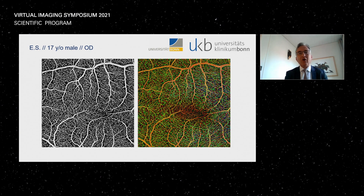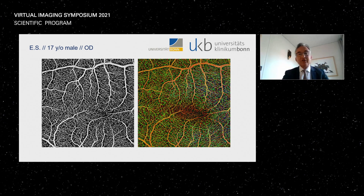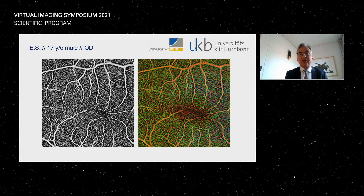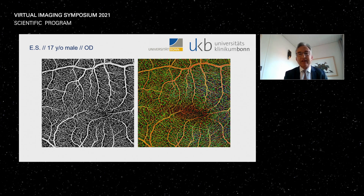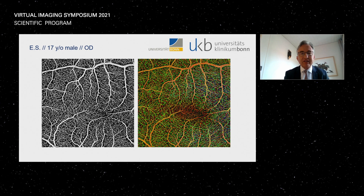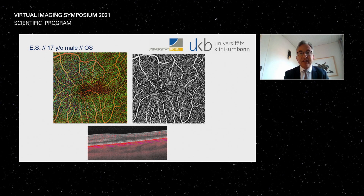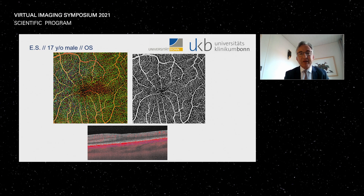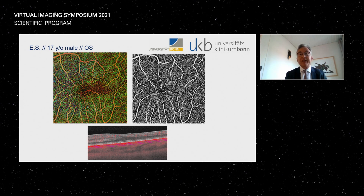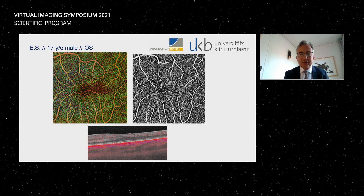Here comes the surprise: when we perform OCT angiography, it turns out there is no foveal avascular zone — vascular tissue is present all over the foveal region where it actually shouldn't be. Obviously there is a connection between the failure of centrifugal displacement of inner retinal layers and this sign of a vascularized fovea where normally there should be an avascular zone. This is in the presence of 20/20 vision, so there is a huge disconnect between morphological changes and functional impact.